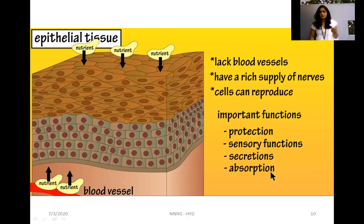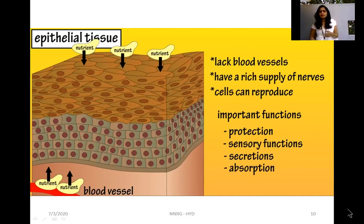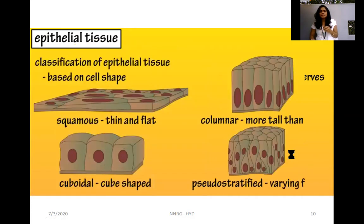Epithelial tissue also helps in the absorption of nutrients from food in the intestinal tract. It also helps in gaseous exchange because it is present in the lungs. Additionally, through sweat it removes waste material from the body.